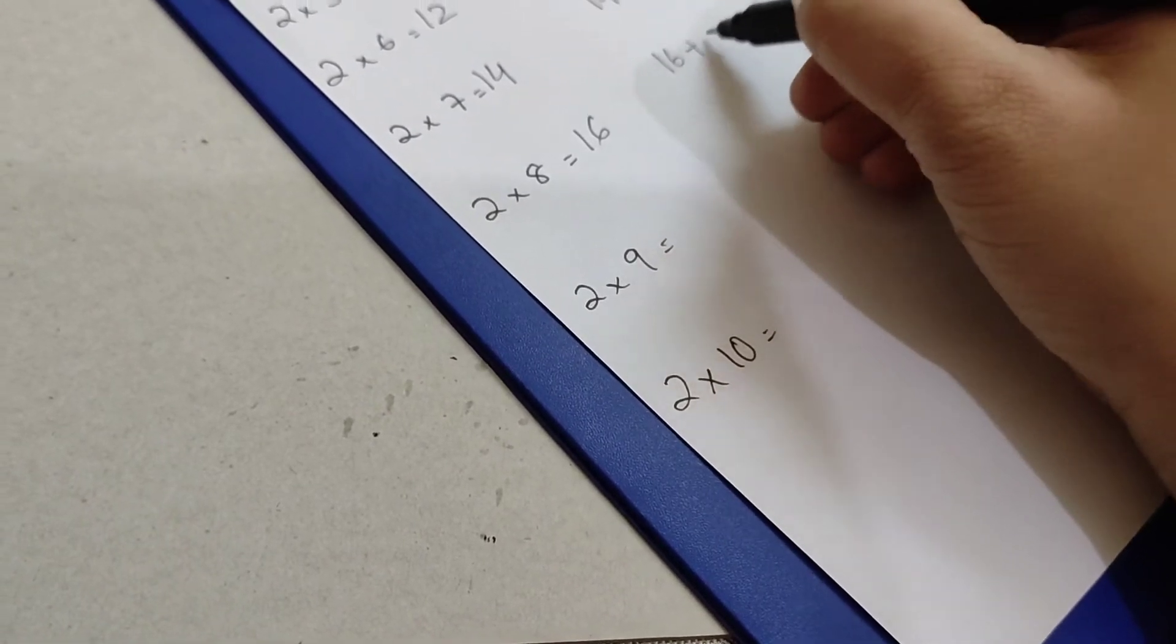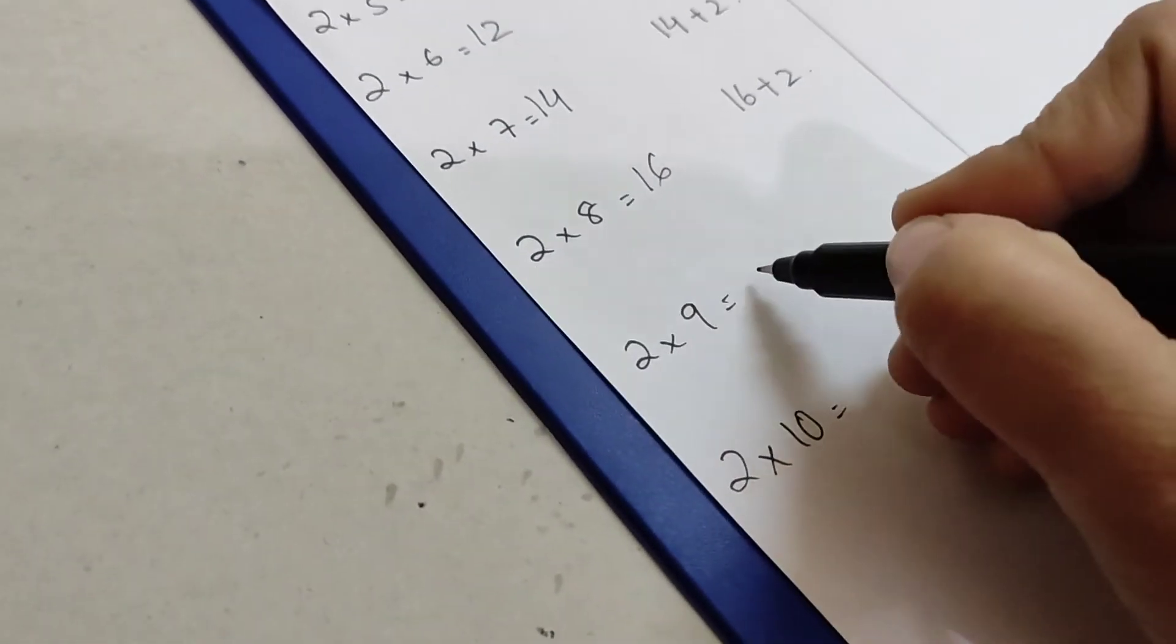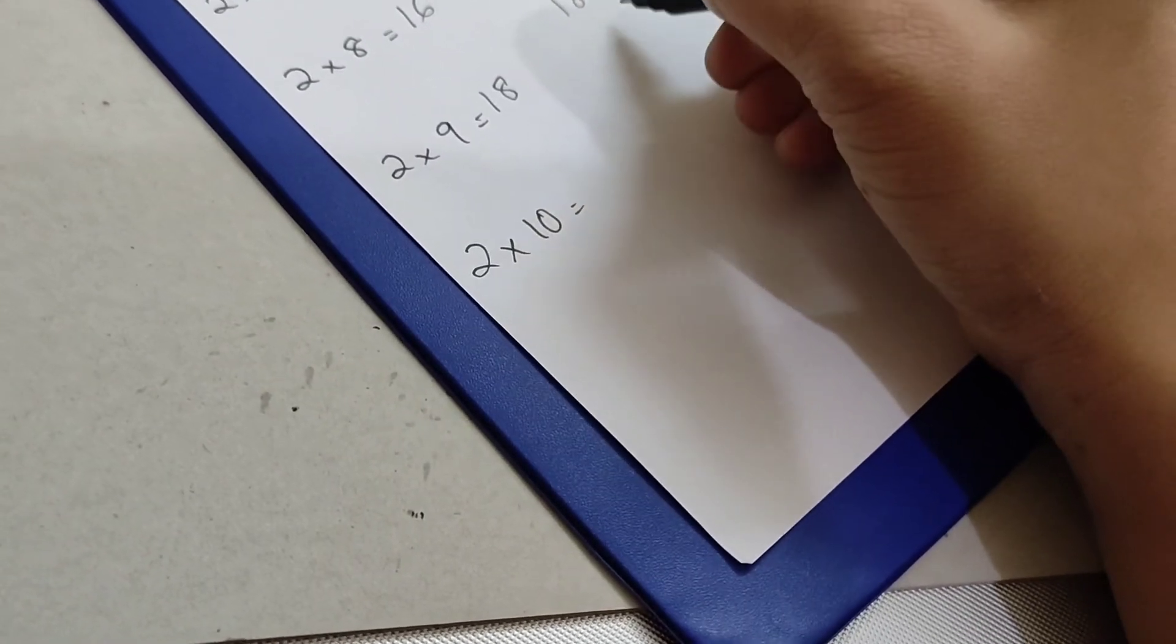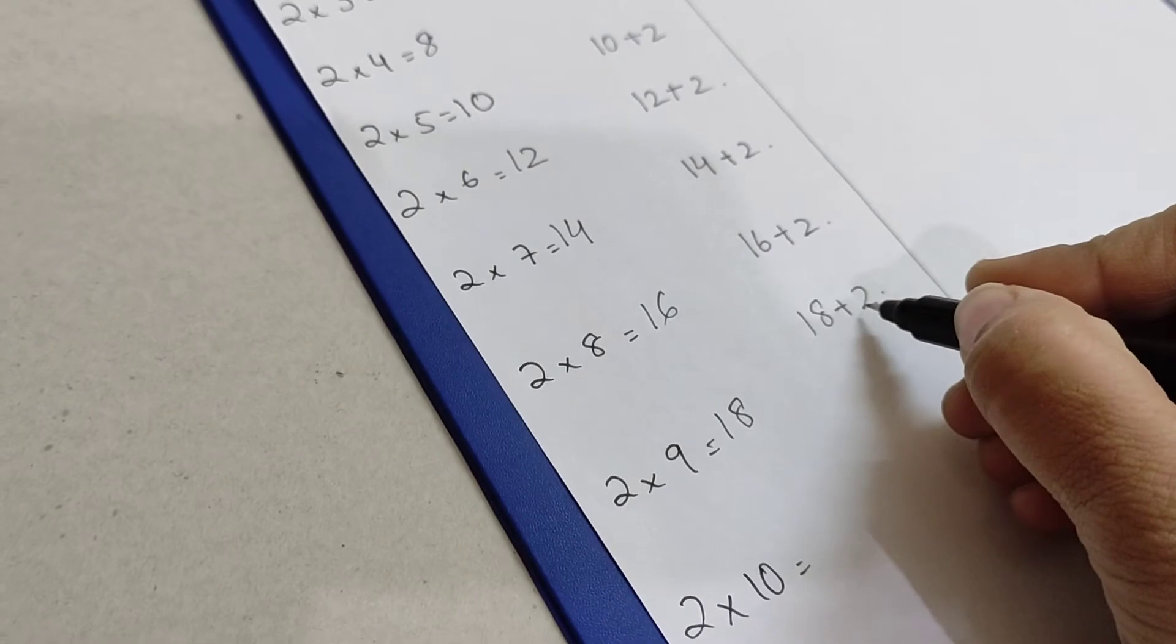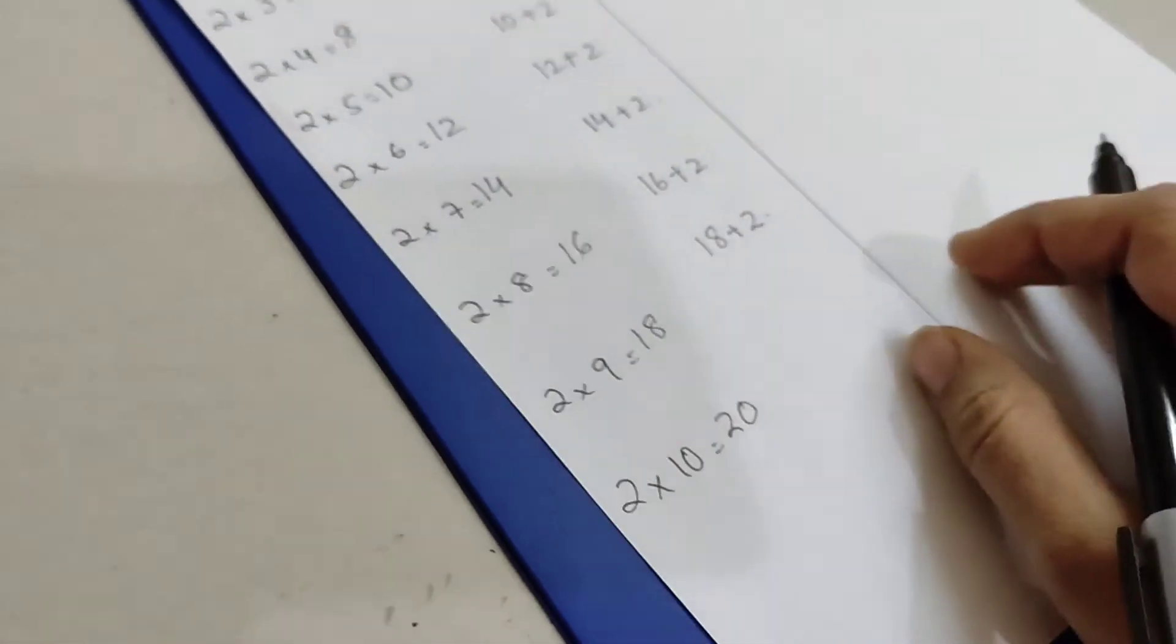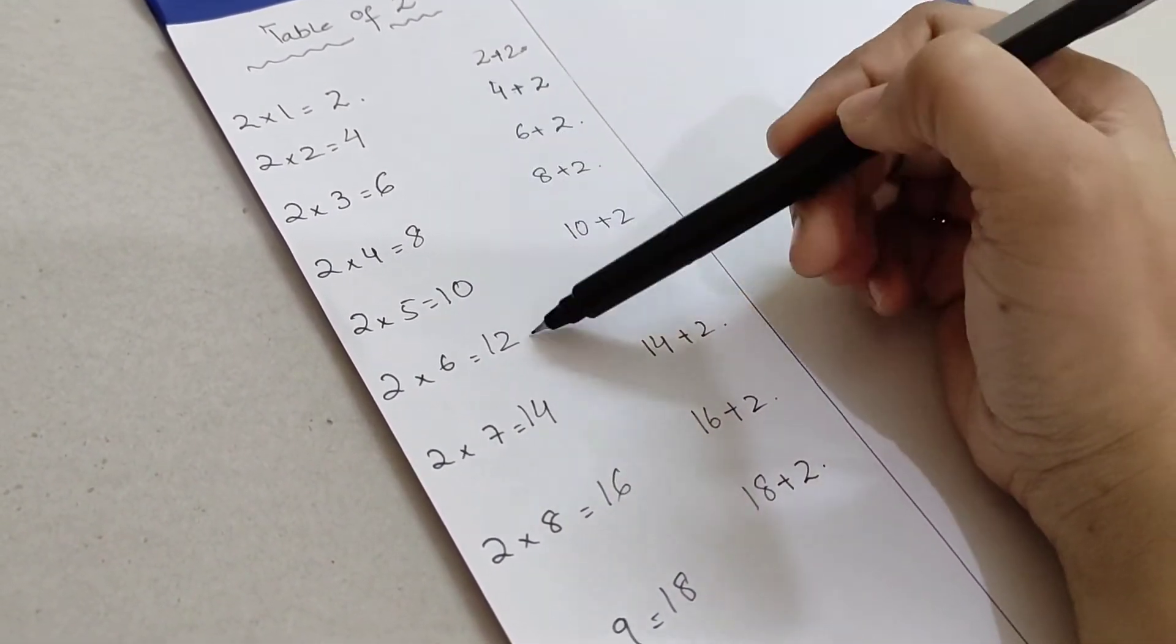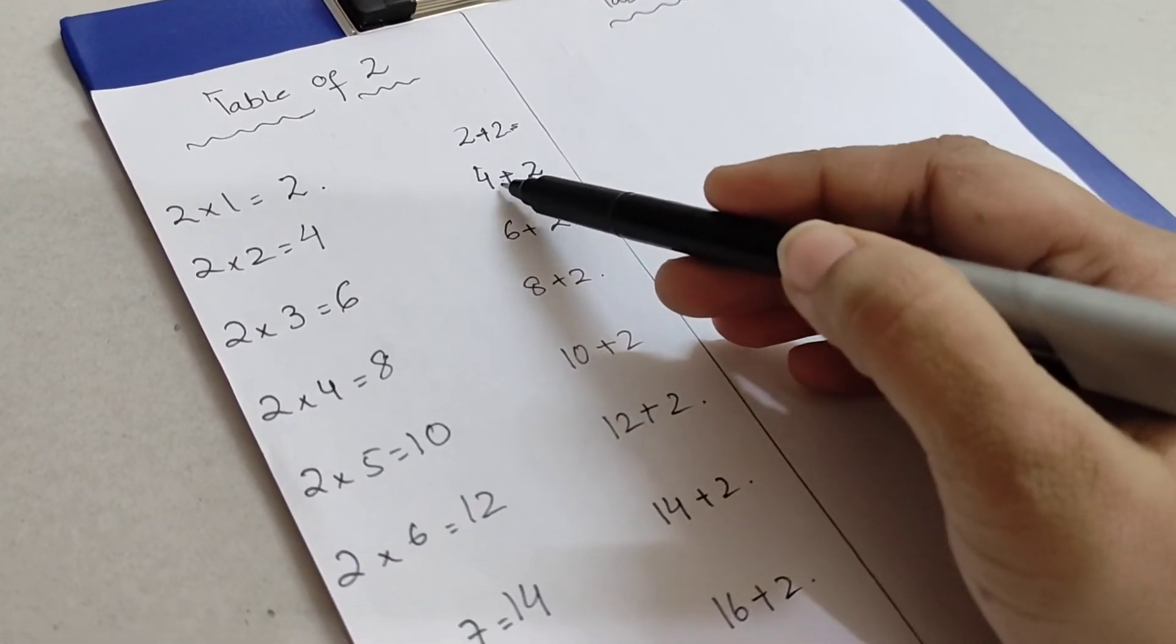Sixteen. The next number, can you guess? Yeah, it will be eighteen. Great! So the last number, eighteen, if you add two more, you will have twenty. So this is how you can teach them about two times table. They can use their fingers by adding two more into the number they got from the previous number.